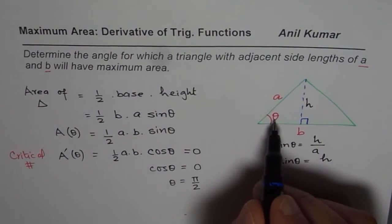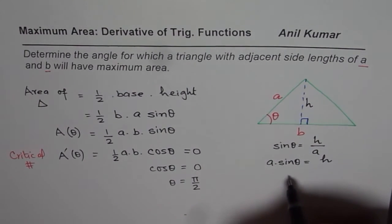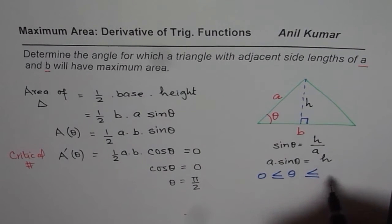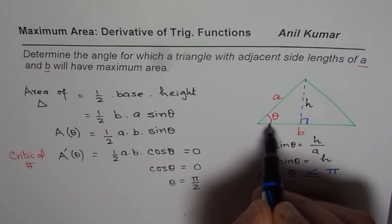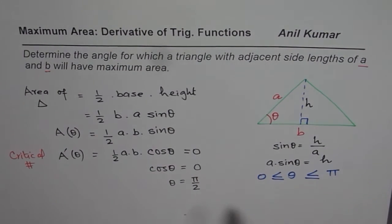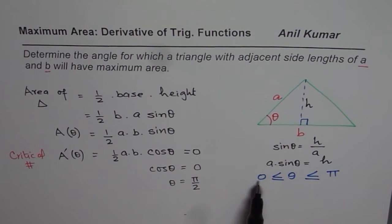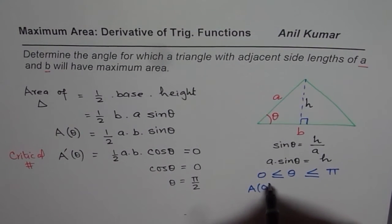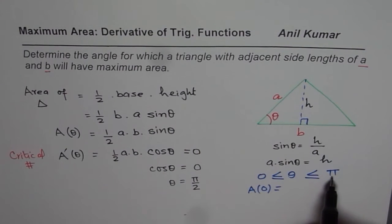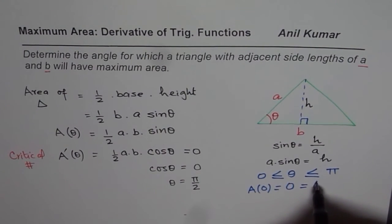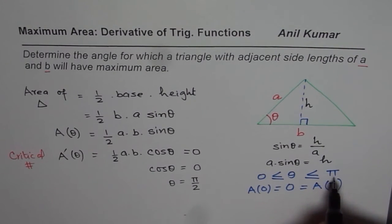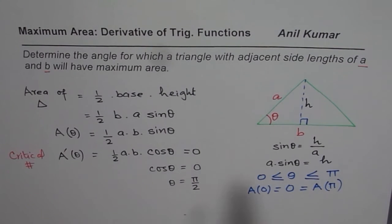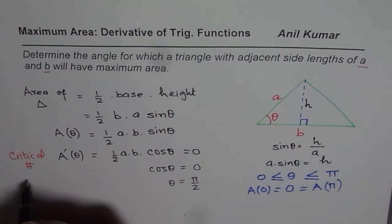Now, considering what values theta could take, theta can be greater than or equal to 0 but less than or equal to pi. The area when theta equals 0 will be 0 (since sin 0 = 0), and the area when theta equals pi is also 0 (since sin π = 0). Those are the boundary conditions, so any critical number we have found will lead to a maximum. This critical number is indeed the maximum.